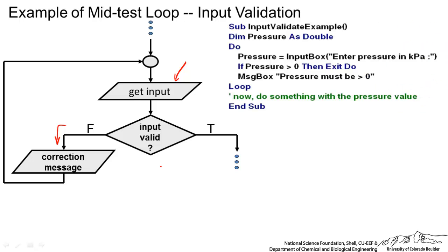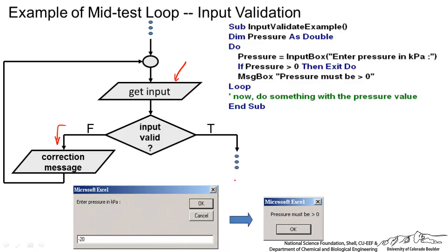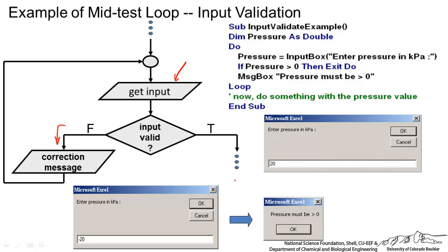For example, it might look something like this where we have input box. You ask the user for a pressure. If pressure is positive, then you exit do. Otherwise, if it is false, then we have this correction message. Pressure must be positive. And then you keep looping. Let's say the user puts negative 20. Obviously that is going to give a correction message. And then it brings up that box again. And then it keeps going until that pressure is positive.